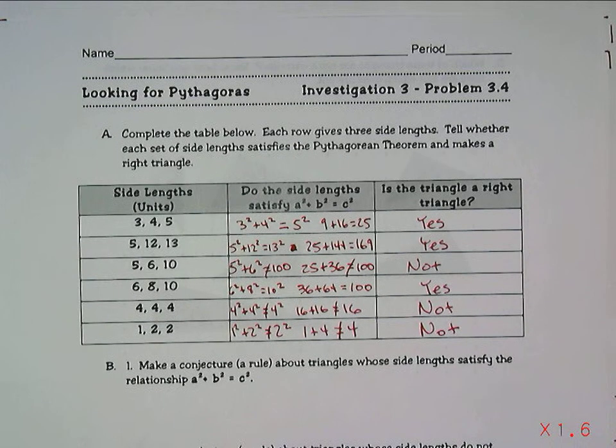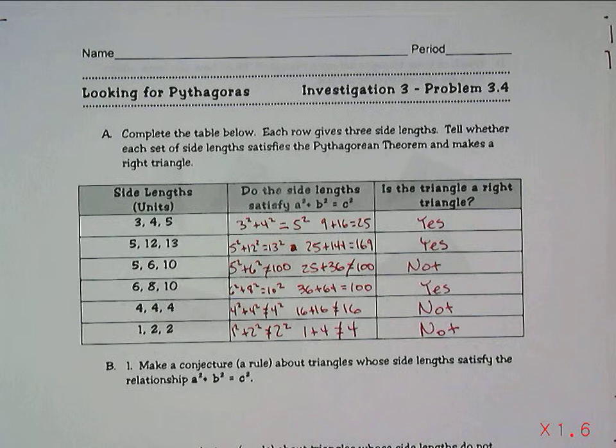The idea now is that we should be able to determine whether or not three lengths, three numbers, will actually make a right triangle.